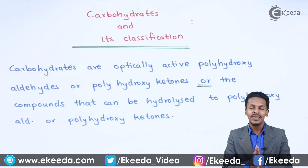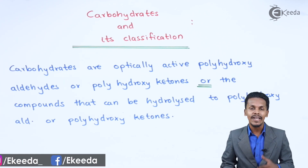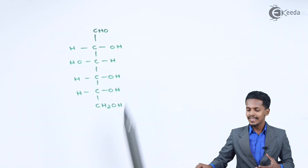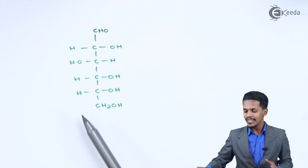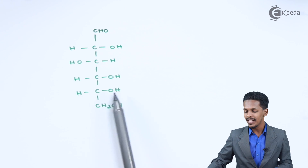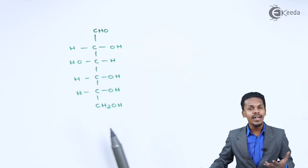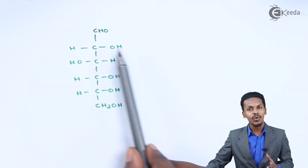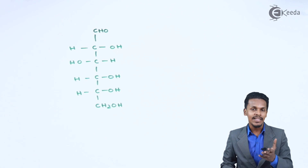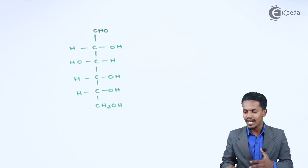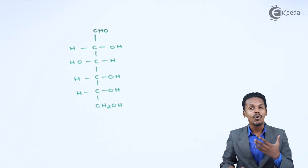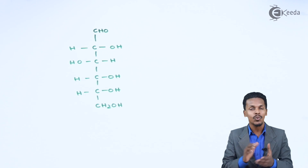Let me give an example — glucose. This is the structural formula for glucose. Here you can see there are multiple OH groups, which are known as hydroxyl groups. Therefore, a Carbohydrate is nothing but a polyhydroxy aldehyde. In this case, glucose is an aldehyde, making it an example of a Carbohydrate — a polyhydroxy aldehyde or polyhydroxy ketone, or a compound which on hydrolysis gives polyhydroxy aldehydes or polyhydroxy ketones.